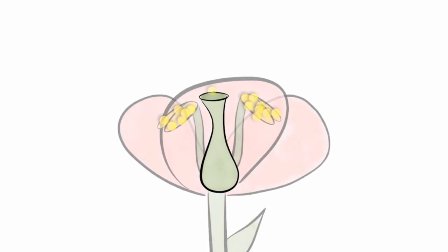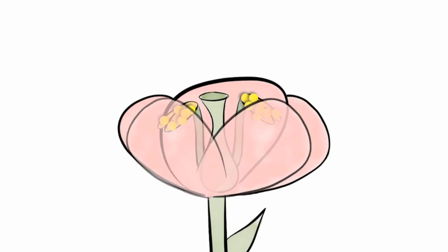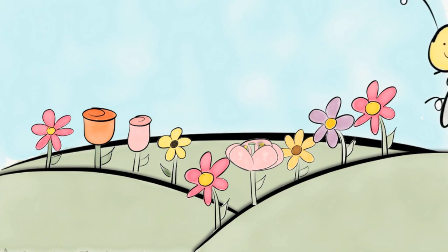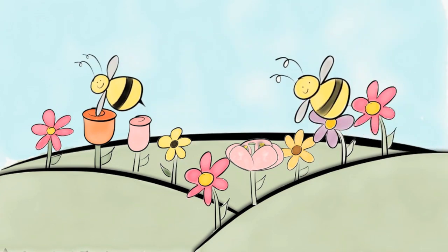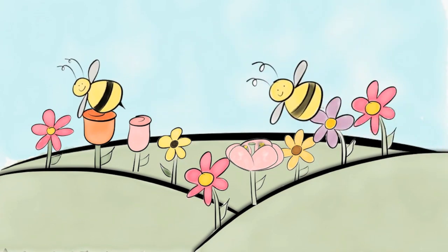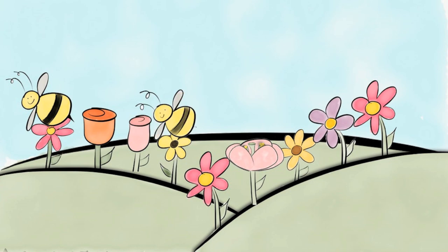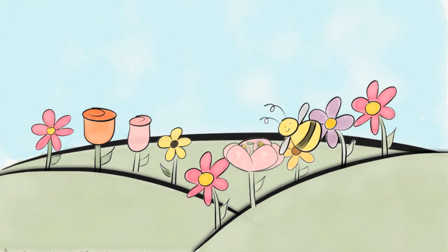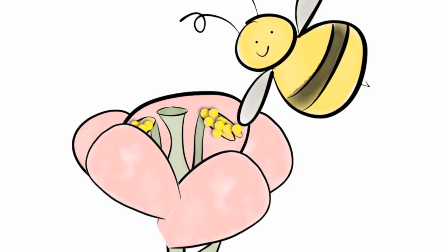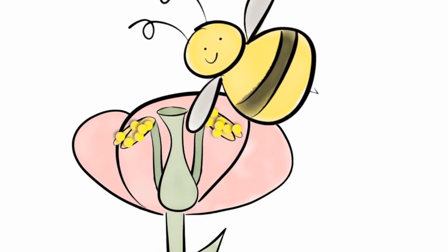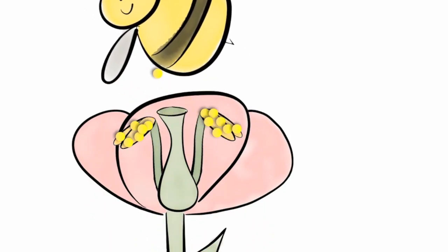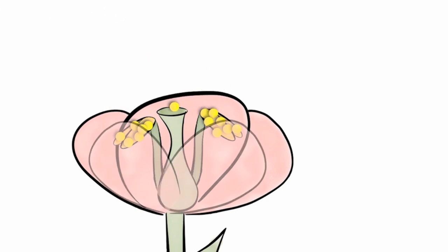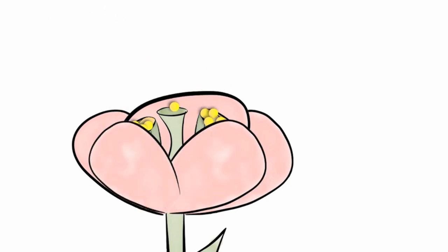The flower depends on pollinators to help with this movement. The honey bee is the most well-known pollinator. Bees are attracted to the bright colors of flowers and the sweet nectar that flowers produce. As the bee flies from flower to flower, grains of pollen get stuck to the bee. Sometimes a grain of pollen falls off and lands on the female part of the flower.